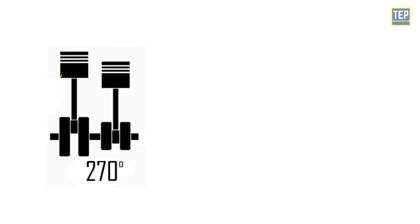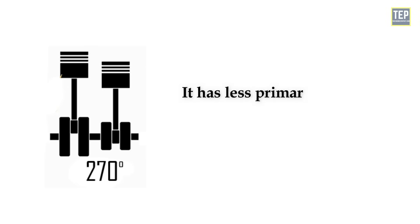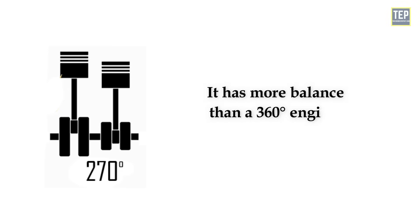The advantages of a 270-degree firing motor are that it's somewhere between 180 and 360. It has less primary balance than a 180-degree engine, but less of a rocking couple. It has more balance than a 360-degree engine, but has more rocking couple.